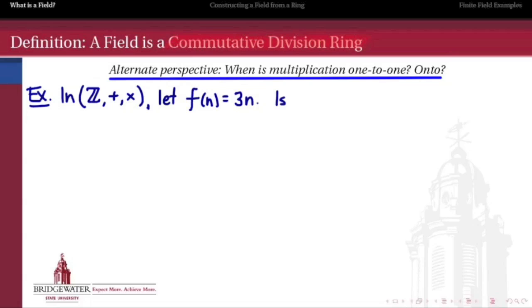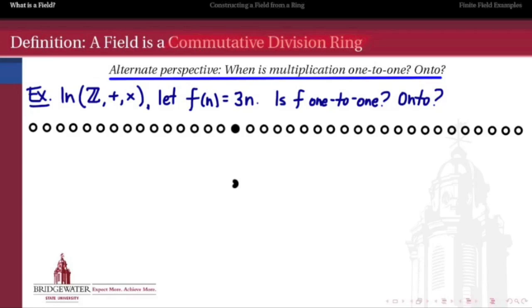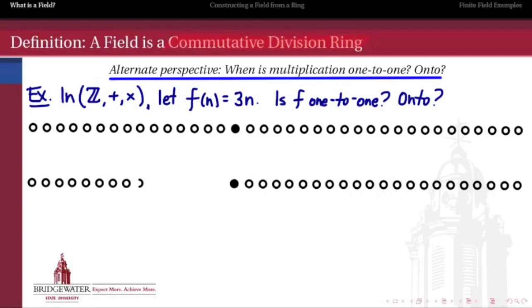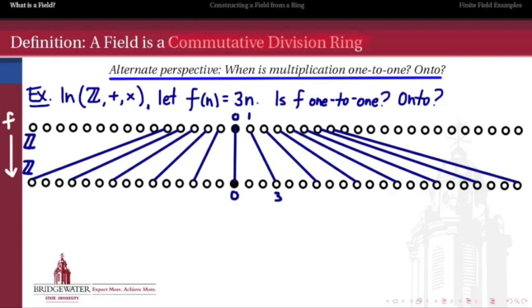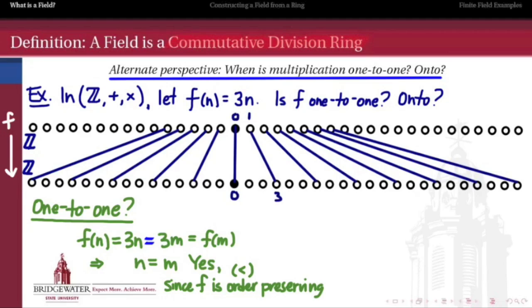I want to ask: is this operation one-to-one, and is it onto? To get a picture of this, we're going to think about multiplying every integer by 3 and asking whether the correspondence set up is a one-to-one correspondence — whether it's one-to-one, whether it's onto. So 0 goes to 0, 1 goes to 3, 2 goes to 6, and so forth. Is this a one-to-one function? If two integers n and m have the same image — if 3n = 3m — then is n = m? Well, sure, we can cancel the 3. Multiplication by 3 is an order-preserving function, and we can use properties of ordered sets to justify why this is indeed one-to-one.